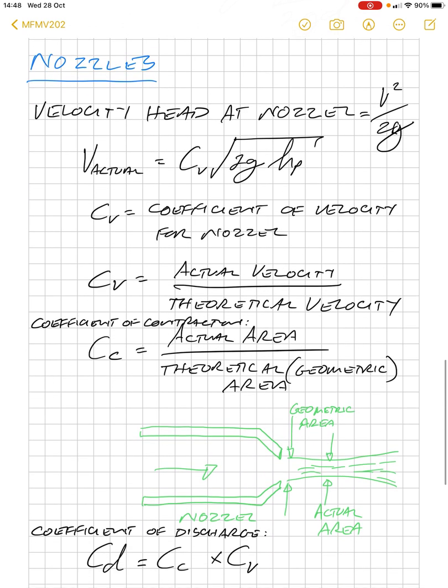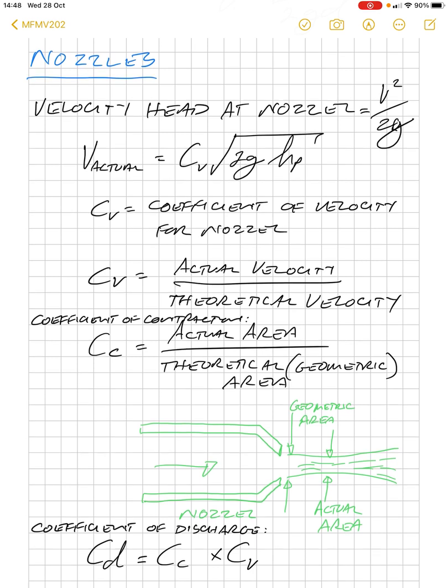If we look at a nozzle, we know that the velocity head through the nozzle is V squared over 2G. If we look at the velocity part of this equation, we can also determine that we need to multiply 2GH,